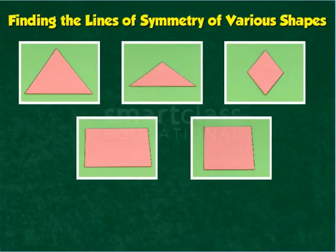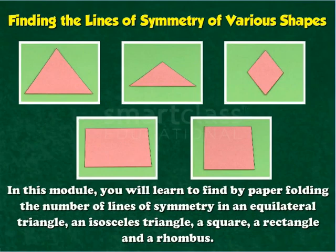Finding the lines of symmetry of various shapes. In this module, you will learn to find by paper folding the number of lines of symmetry in an equilateral triangle, an isosceles triangle, a square, a rectangle, and a rhombus.